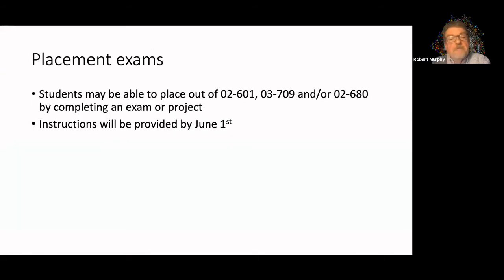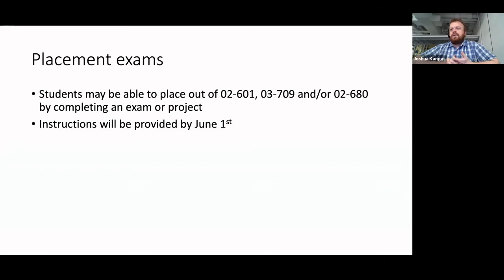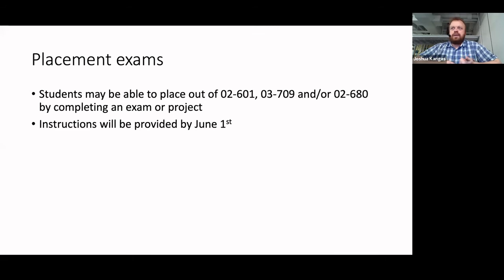Three courses that students can test out of — because students come in with various levels of experience in computational work or biological background. You can test out either by taking an exam or by completing a project. You send information early in the summer, complete those tasks, and by fall we'll know whether you passed and will make adjustments to your schedule accordingly.